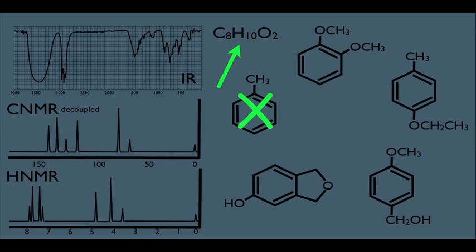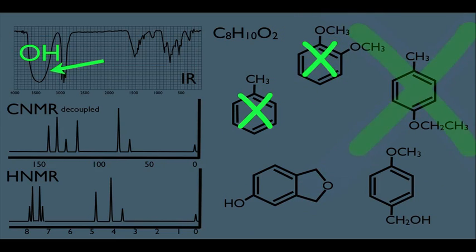Another thing we should notice is this right here — that's a very obvious broad peak for an OH functional group. This means that our answer must have an OH in it. That enables us to eliminate this structure and this structure, leaving the two bottom structures because they have OH substituents.